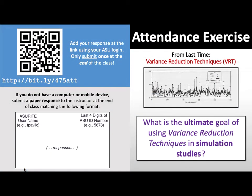Course evaluations should be available until before finals week. Now let's do a quick attendance exercise. We've been talking about variance reduction techniques for Unit K. The short-term goal of VRTs is obviously to reduce variance — that's right in the name. But what's the ultimate goal? Why do we care about reducing variance when doing simulations? If you were to look up common random numbers, the definition will say 'this method reduces variance,' but they don't often say why that's a good thing.